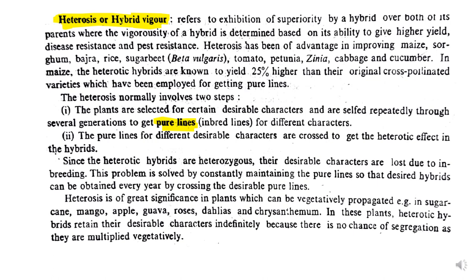Once hybridization is done and progeny is obtained, heterosis or hybrid vigor refers to the exhibition of superiority by a hybrid over both parents. If the progeny gives more yield or more vigor than both parents, we say that hybrid vigor or heterosis has been obtained. The vigorosity of the hybrid is determined based on the ability to give higher yield, disease resistance, and pest resistance.